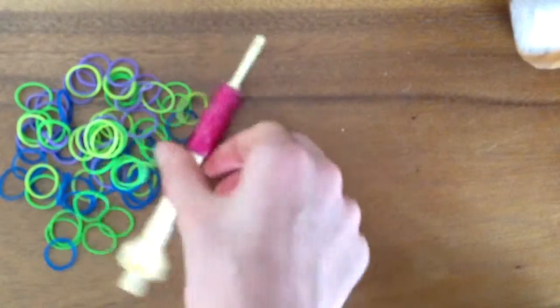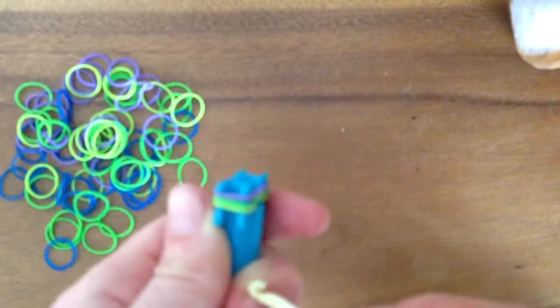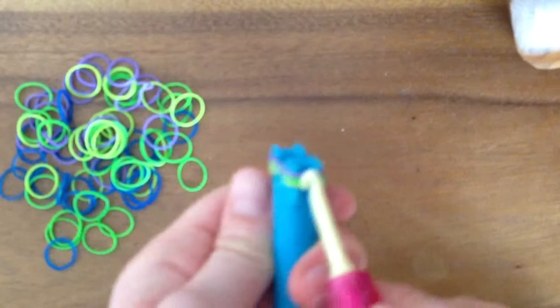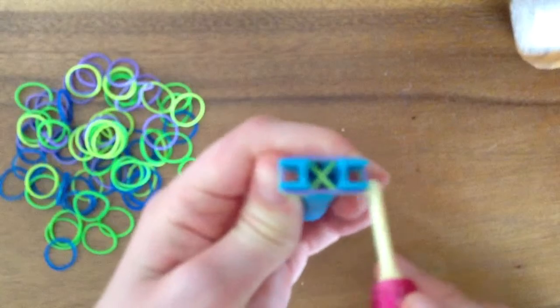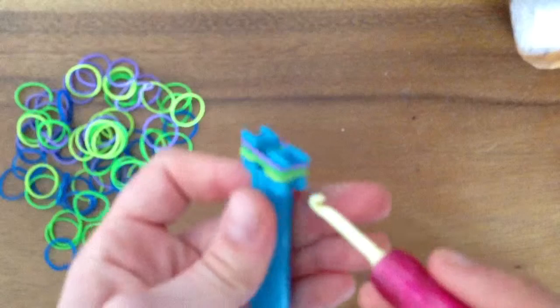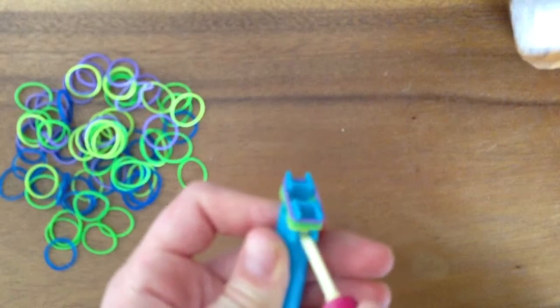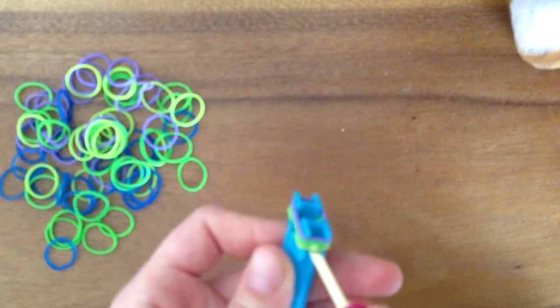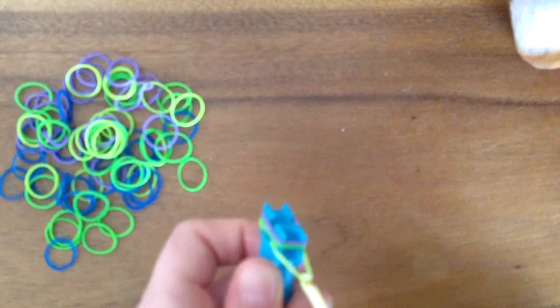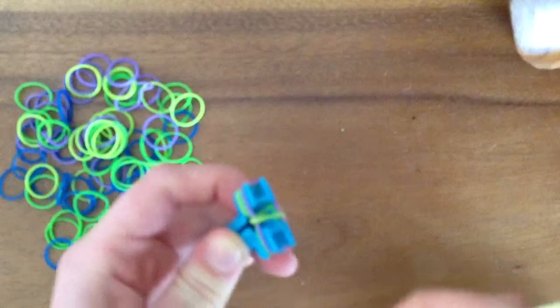Then we are going to take your crochet hook and turn your mini loom to this side. As you can see, there are two sides. One over there and one over there. You could start off with either one. You take your crochet hook, stick it in that little gap, and pull the bottom rubber band out. Then you're going to bring it around to the middle and let go.